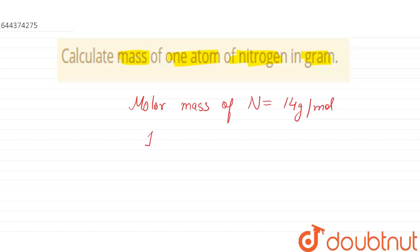From here we can say that one mole of nitrogen has 14 grams, and we know that one mole has 6.022 into 10 to the power 23.